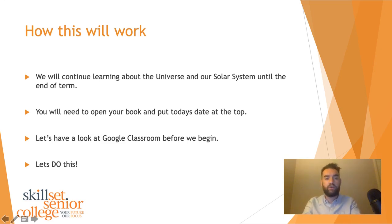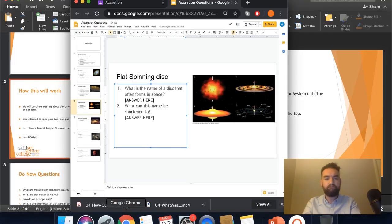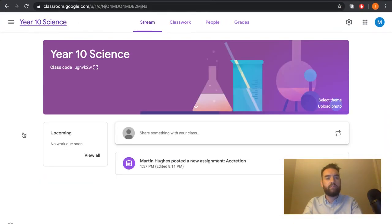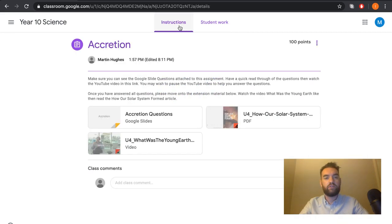Let's look at Google Classrooms before we start properly. If you log on to Google Classrooms and you go into Year 10 Science, this is what you should see. What you should see just now is this part here. Martin Hughes posted a new assignment, Accretion. If you click on this link and go to Instructions, this is what you should see.